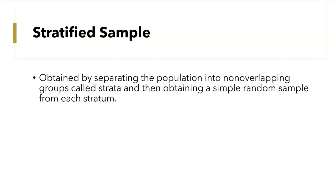The very first method we're going to talk about is stratified sample. A stratified sample is obtained by separating the population into non-overlapping groups called strata and then obtaining a simple random sample from each stratum. We talked about simple random sample in a previous video — that's basically where you have an equal chance of picking each individual. So basically with this one, they separate the population into groups and there is no overlapping.